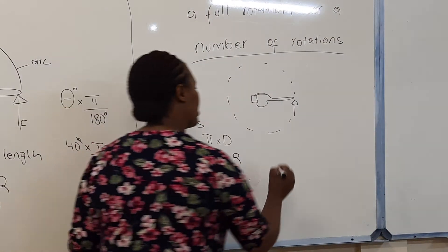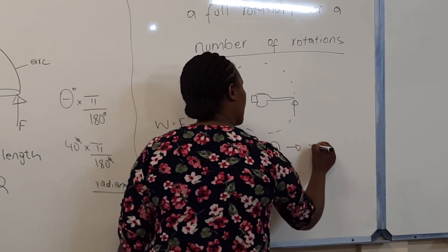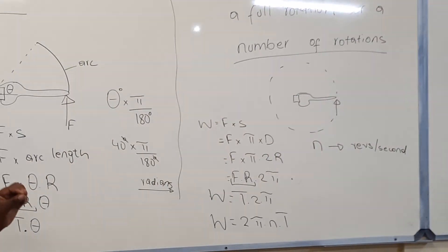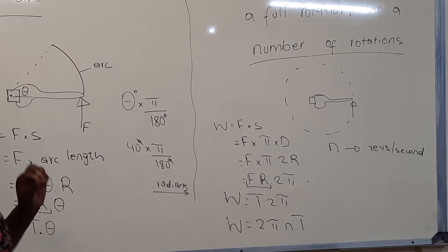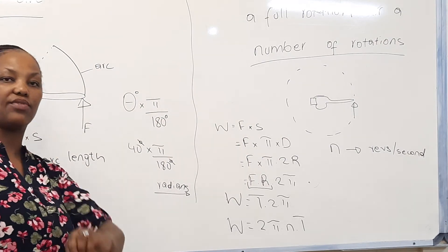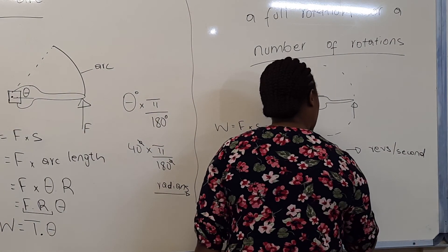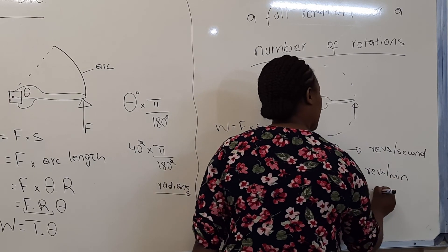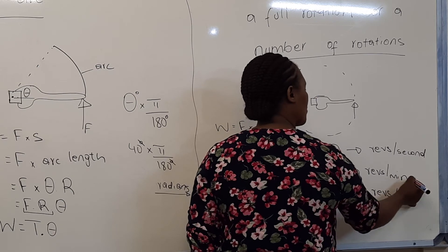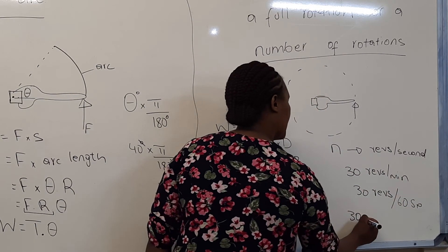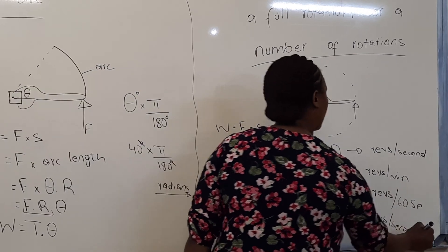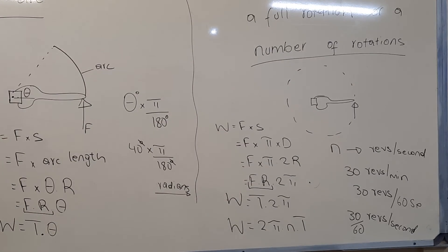What you must remember with this equation is that your n must always be in revolutions per second. So if they give it in revolutions per minute, you change it to revolutions per second, because your work done must come in joules. For you to get joules, you must use basic SI units — for time, you must use seconds, not minutes. For instance, if they give you 30 revolutions per minute, you ask yourself how many seconds is one minute — 60 seconds. So you end up saying 30 divided by 60, and it's going to be in revolutions per second. And that is how these equations came about — you either use this equation or that equation all the time.